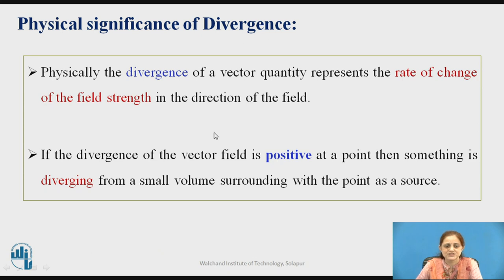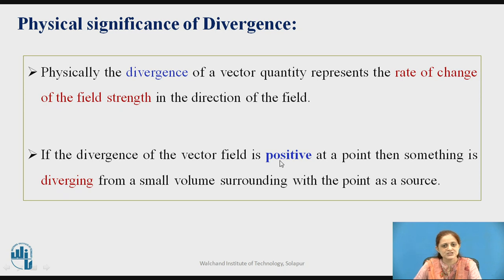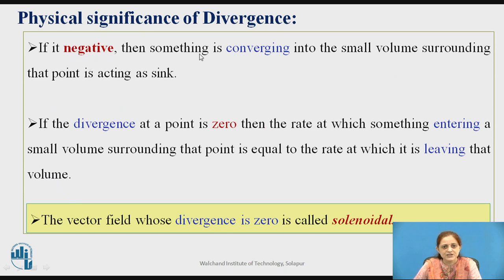Physically, the divergence of a vector quantity represents the rate of change of the field strength in the direction of the field. If the divergence of the field is positive at a point, then something is diverging outward from a small volume surrounding that point, acting as a source. If the divergence at a point is zero, then the rate at which something enters equals the rate at which it leaves. A vector field whose divergence is zero is called a solenoidal field.